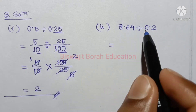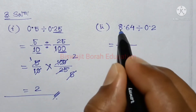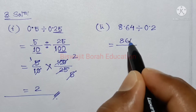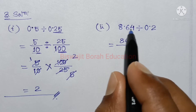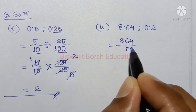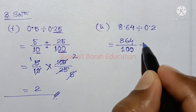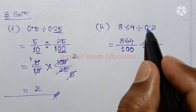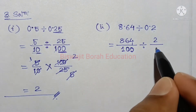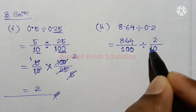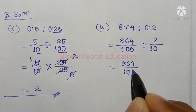Bring in the values: 8.64 divided by 0.2. So, 8.64 is 8.64. The result of 8.64 divided by 0.2 — here we have 0.2 coming in as the denominator.